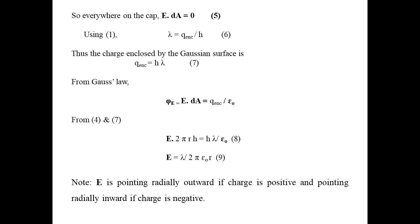From Gauss's Law, phi-E equals E dot dA equals 1 by epsilon-nought times the charge enclosed. We know that the surface area of the cylinder is 2 pi R H, and we have the electric field E equals H lambda by epsilon-nought. From this, the electric field E equals lambda by 2 pi epsilon-nought R. The electric field E is pointing radially outward if the charge is positive and pointing radially inward if the charge is negative.